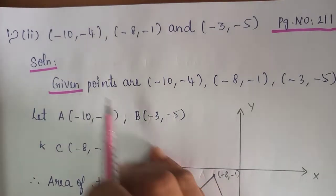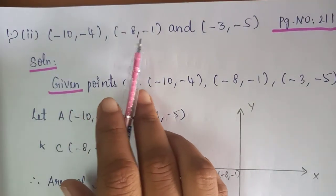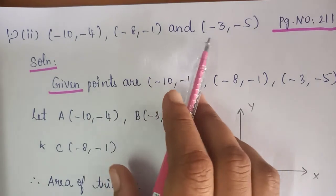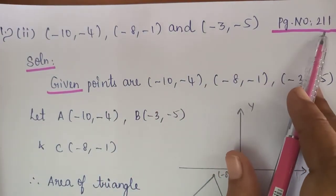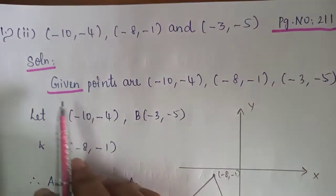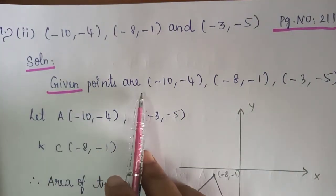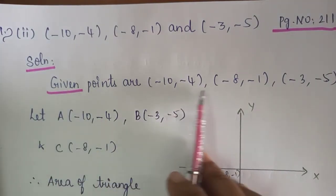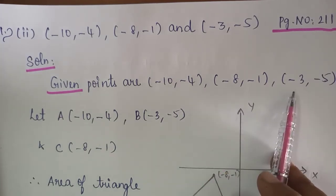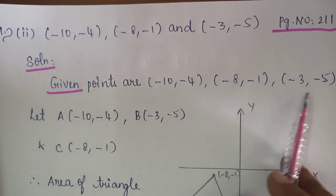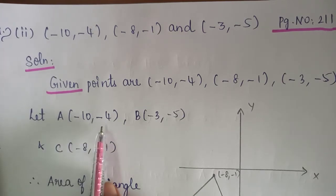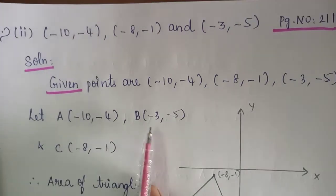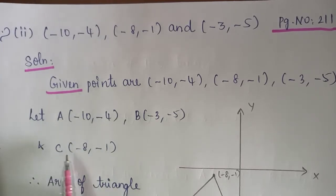First question, second subdivision: points are (-10, -4), (-8, -1), and (-3, -5), belonging to page number 211. Solution — let us consider A as (-10, -4), B as (-3, -5), and C as (-8, -1).